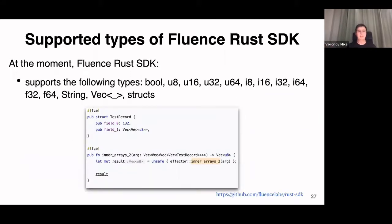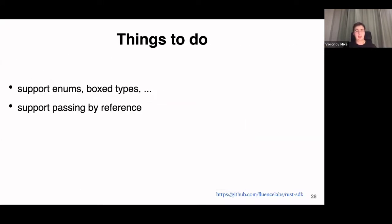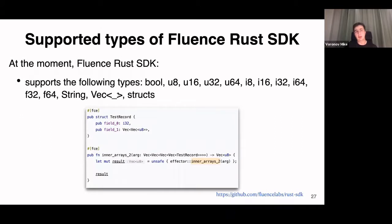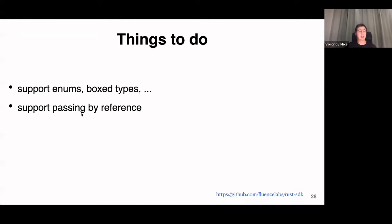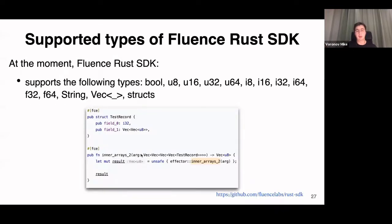Currently Fluence SDK supports a lot of types: all integral types, floating-point types, strings, vectors, structures, and any combination of them — for example, arrays of records that contain inner arrays. We have some limitations: we don't support box types or enums; we support only structs, vectors, and strings from complex types and any combination thereof. We currently only support passing by value, and we are working on passing by reference.